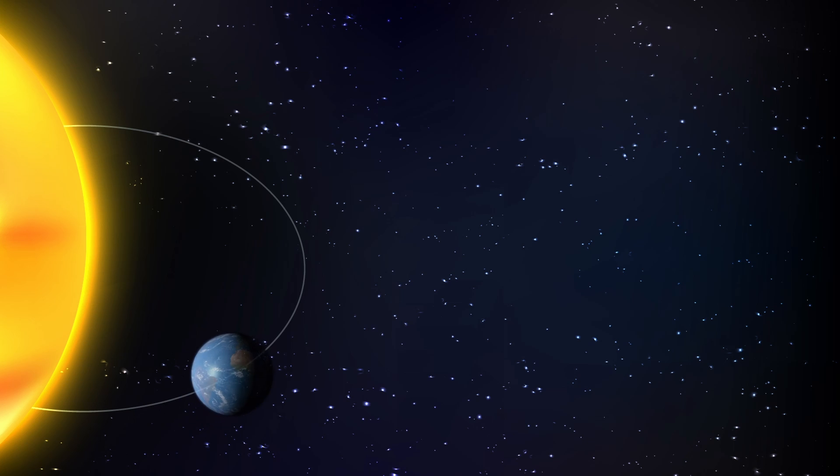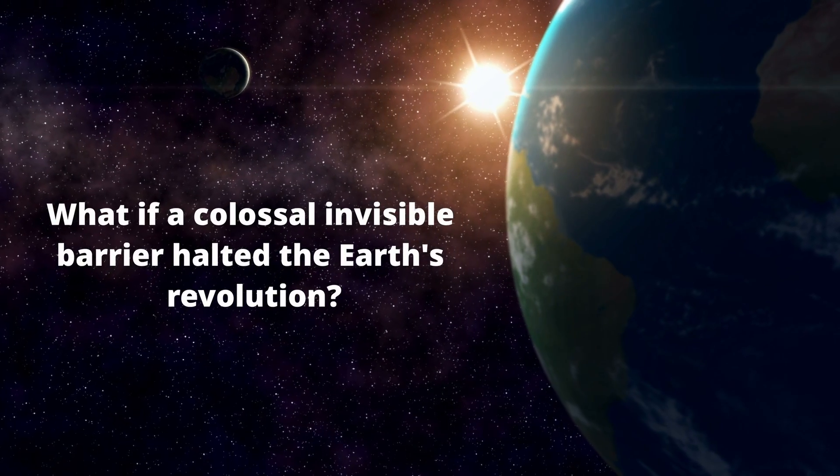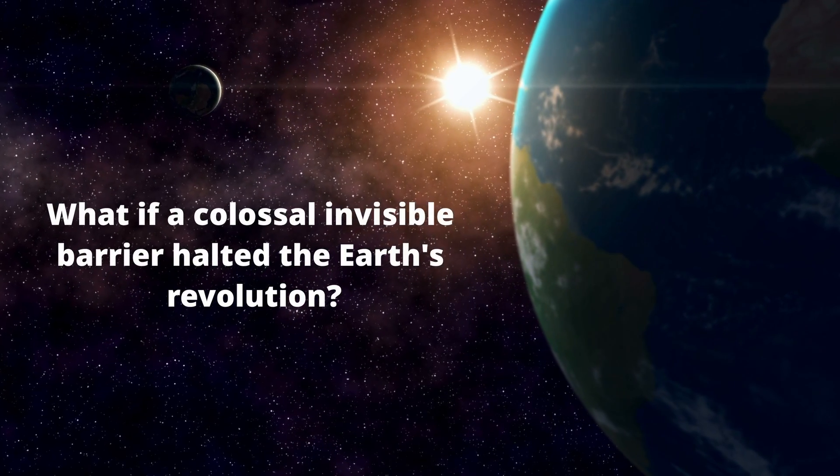Have you ever wondered about the consequences if the Earth's axis rotation remained consistent, but it stopped orbiting around the Sun? What if a colossal invisible barrier halted the Earth's revolution around our solar companion?